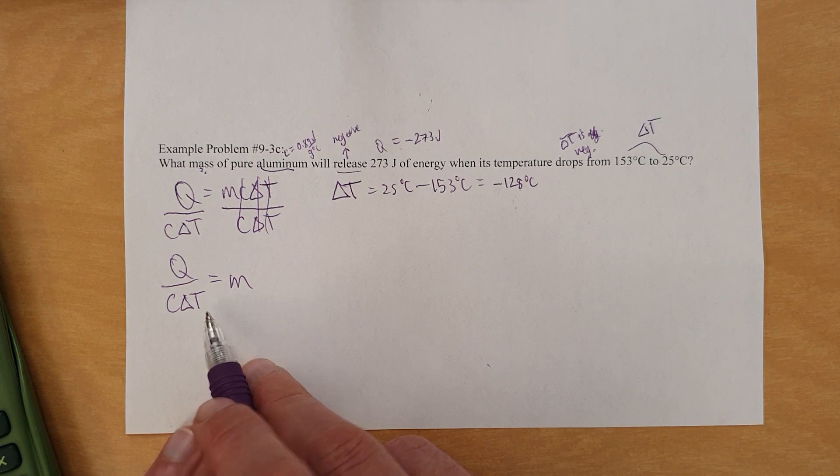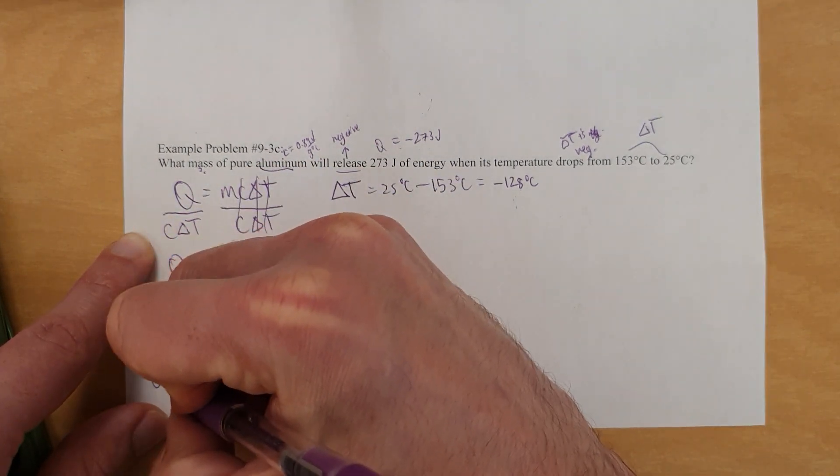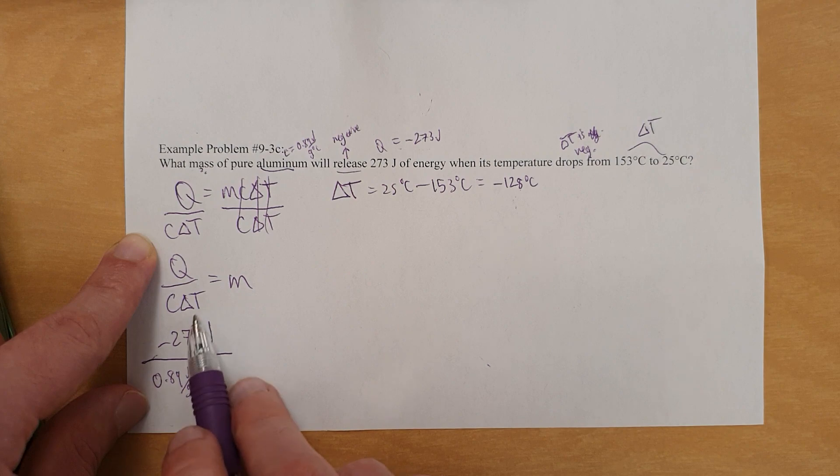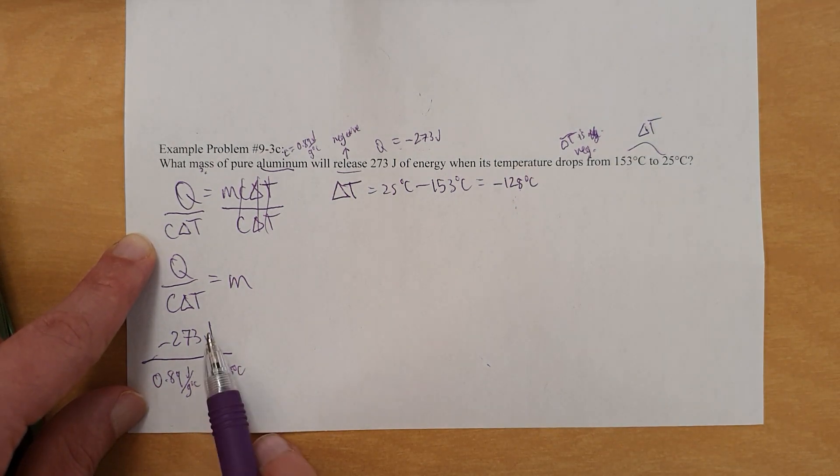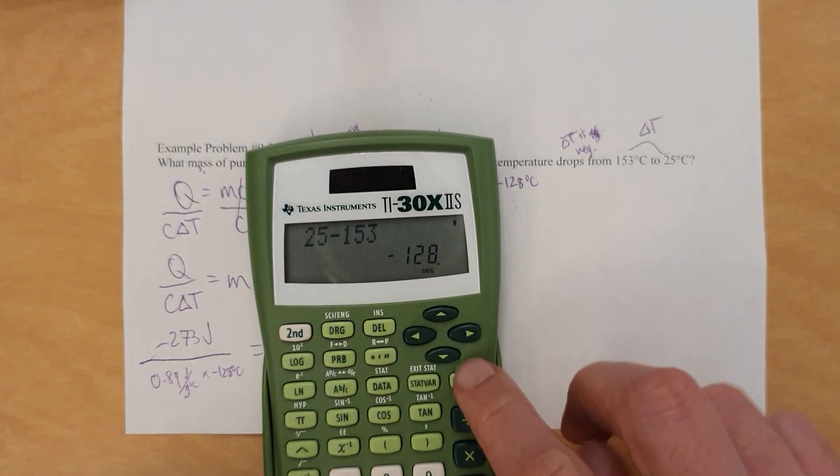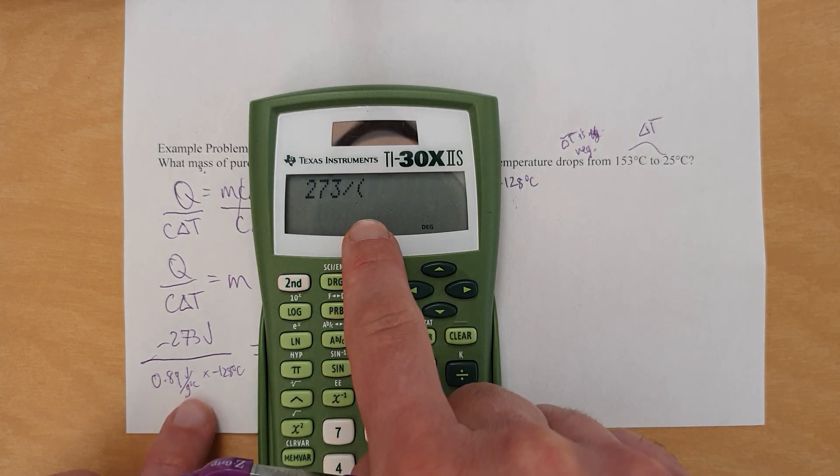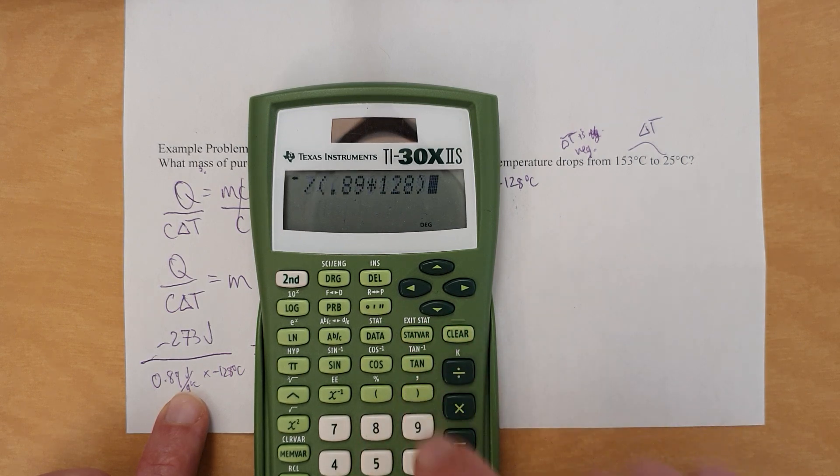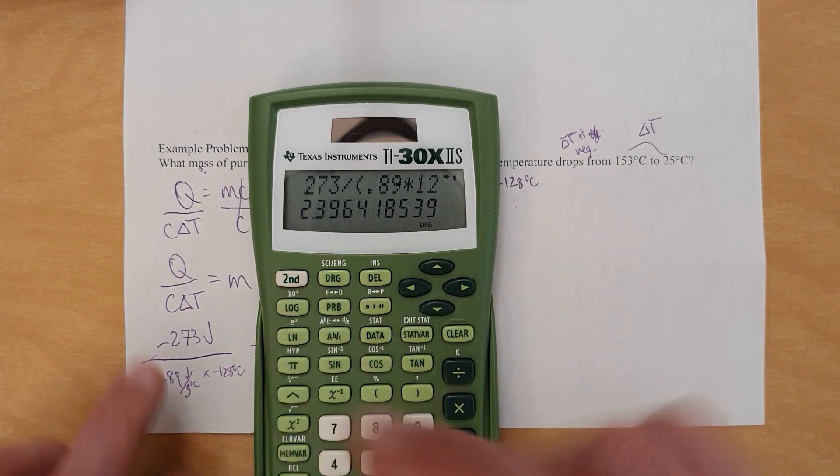Like this. So we plug in the numbers now. Now Q is negative 273 joules. And on the bottom, C is 0.89 joule per gram degrees Celsius. And then on the other part of that right here, the delta T, that's the negative 128. So it turns out this will cancel this. This will cancel this. Bottom of the fraction flipped upside down will give grams as its unit. So actually this will cancel to give grams properly. And when you do the actual math itself, you get 273 joules divided by, in parentheses, yes, don't forget that parentheses or else you're going to get this wrong, 0.89 times 128. Now let me point something out. I just realized as I did that. I got a positive number. And you'll notice I left off the negative signs.